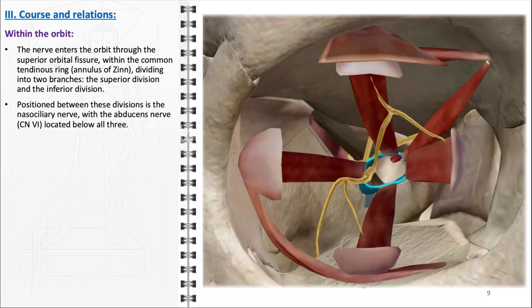Below all three nerves, the abducens nerve is located. The abducens nerve has a critical role in eye movement, innervating the lateral rectus muscle, which abducts the eyeball. The arrangement of these nerves within the confined space of the orbit is not only an anatomical marvel but also a potential site for various pathological conditions. For instance, an orbital fracture or a lesion in the superior orbital fissure can lead to a complex presentation affecting multiple aspects of eye function due to the involvement of these nerves.